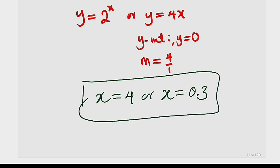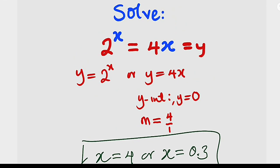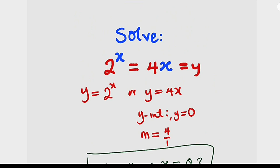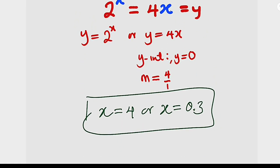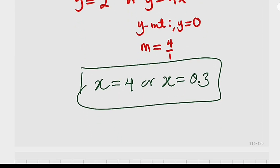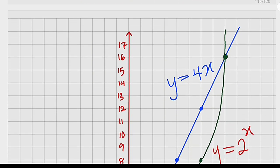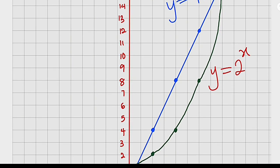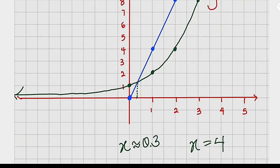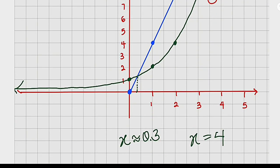Hence we can conclude that x is either 4 or approximately 0.3. You can plug them into the main equation to see whether the left and right hand sides are equal. Thank you for watching — do share with your learning colleagues and don't forget to subscribe to my YouTube channel for more exciting videos. Bye!